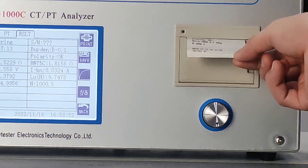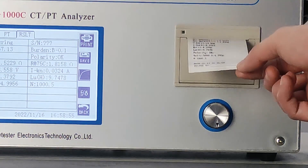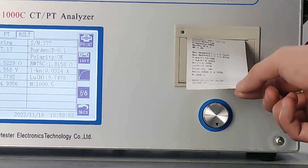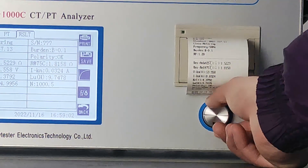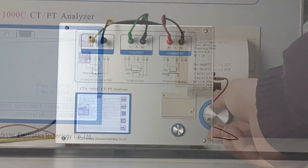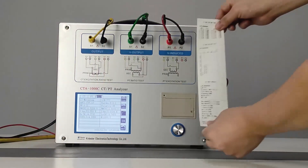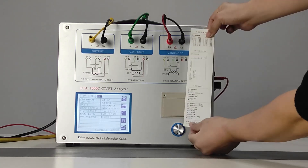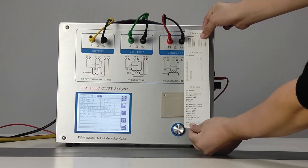The embedded panel printer can print test results on site, including test parameters, excitation curves, error tables, and more.